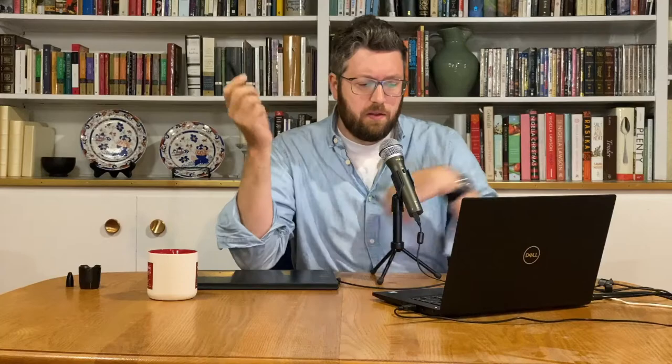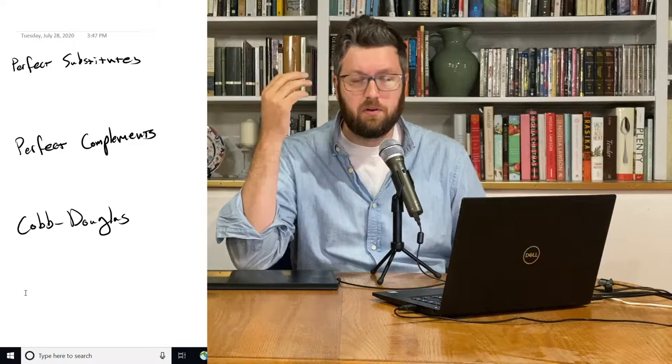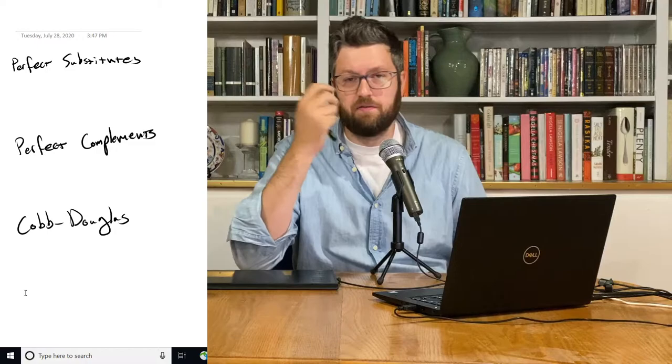So these three are called the perfect substitutes model or production function, the perfect complements production function, and the Cobb-Douglas production function, named after Cobb and Douglas. So let's go over what each of these three kind of look like.